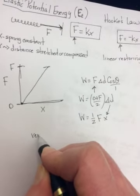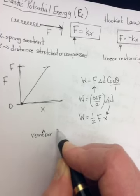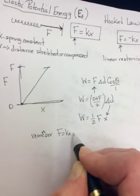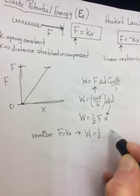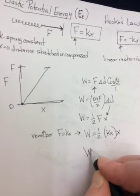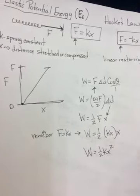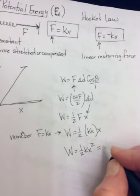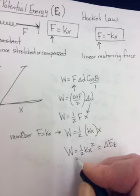But remember our F is KX. So remember, F is equal to KX. So if I sub that in, then I get W is equal one half brackets KX times X. So W is equal to one half KX squared. And this is the equation for the change in elastic potential energy.